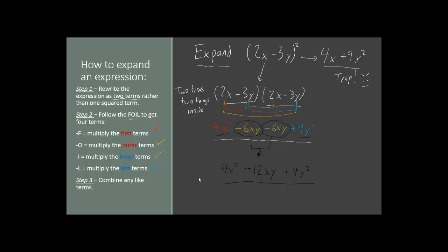And that's the FOIL Method. The important thing is: if you see a polynomial that's squared, you can't just square everything inside it. You have to rewrite it into two parentheses and then use the FOIL Method to get the correct answer. Thank you very much for watching. We'll see you again next episode.